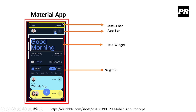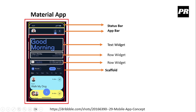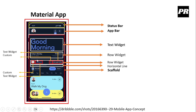Inside the Scaffold widget, we have a Text widget, then a Row widget which has four elements: today, December 12, 75%, and completed tasks. Then another Row widget under it, and a horizontal line. Inside that Row widget, we also have some elements.